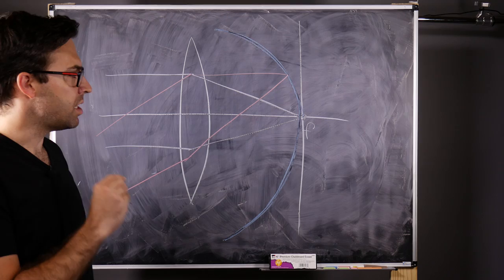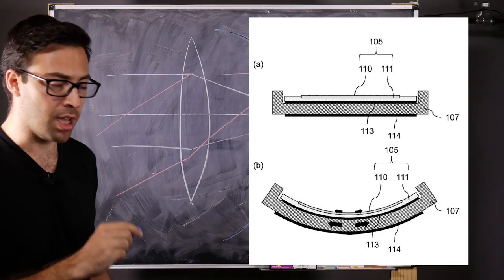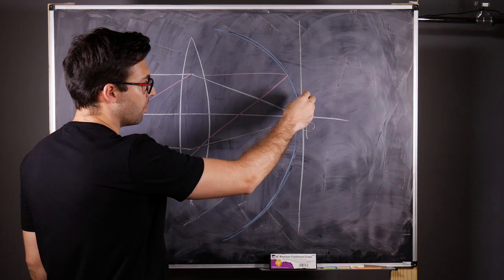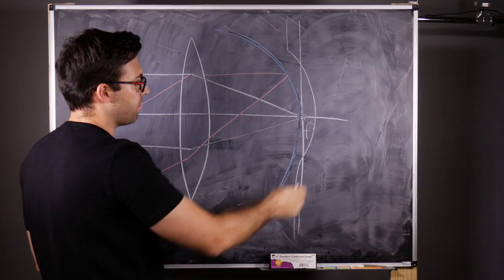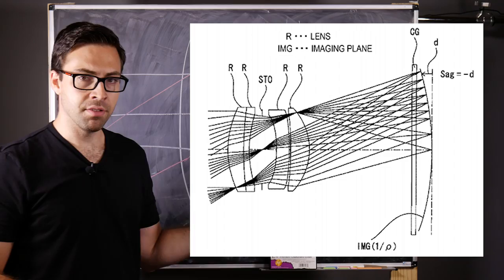So instead of something like this, you could actually have maybe not something this exaggerated, but you could actually have a film plane that might mimic this field curvature problem. And I'll put some patents up that show that this is actually being actively developed. Now why would this be the case?